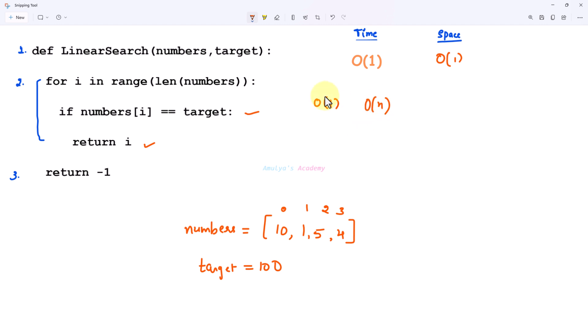So here the time complexity of this for loop is big O of n. It executes n times so n is the length of list, the number of elements present in the list.